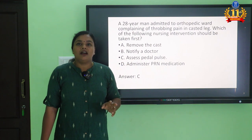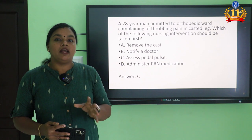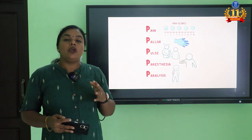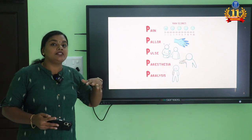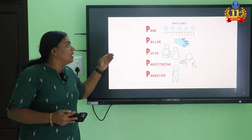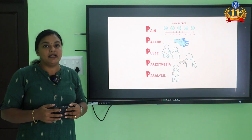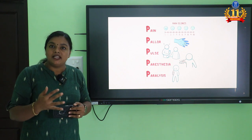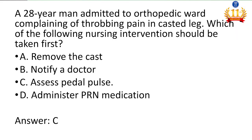The question is about throbbing pain related to fracture and cast. We need to know what is important to check related to a casted leg — the 5 P's: pain, pallor, pulse, paresthesia, and paralysis. For discharge teaching, we need to give education about these 5 P's. Pain level we assess; pallor and pulse — we teach the patient to assess the distal pulse. Any cold temperature or pulse changes, we tell them to return to the hospital. The answer is assess the pedal pulse.